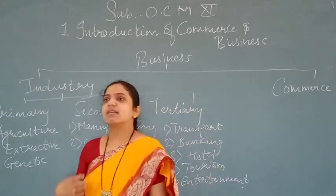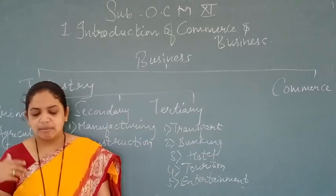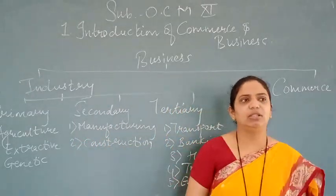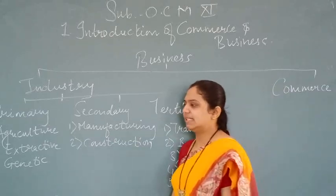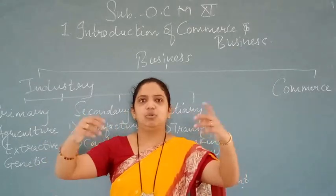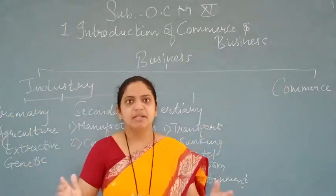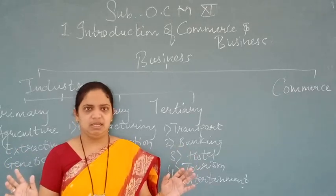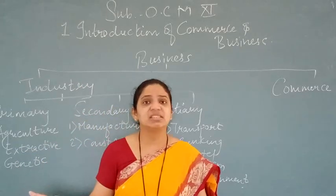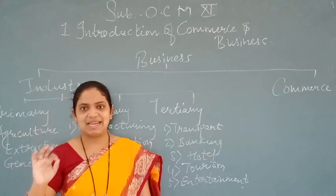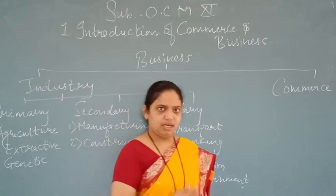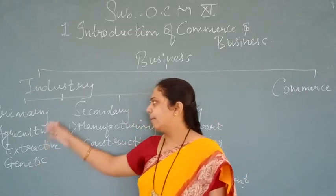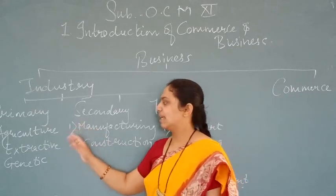Genetic industries engage in reproduction and multiplication of plants and animals. Examples include sericulture, horticulture, and animal husbandry. In animal husbandry, when you start with four animals, they multiply to eight, then twelve — reproduction and multiplication take place. Plant nurseries are also an example of genetic industry. That was primary industry, divided into agriculture, extractive, and genetic.